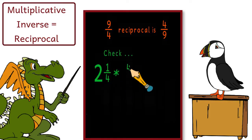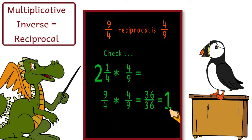2 and 1 fourth times 4 ninths equals 9 fourths times 4 ninths, which equals 36 36th, which equals 1.